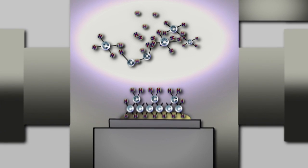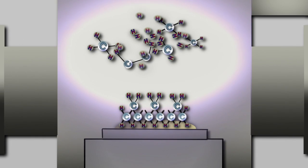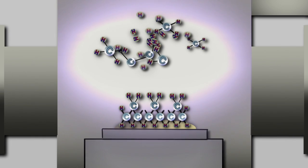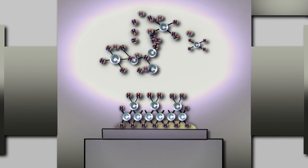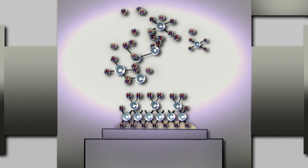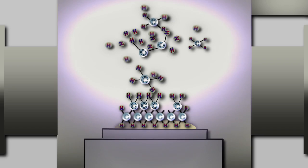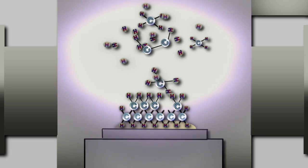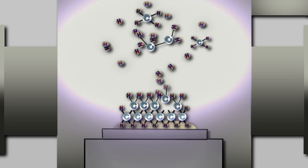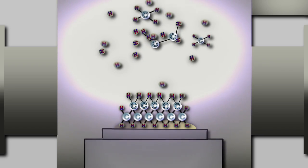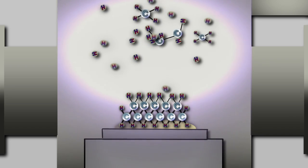If you look at the energetics of the situation, the system gains a lot of energy by depositing carbon from a carbon-hydrogen mixture, and that is given by the phase diagram.